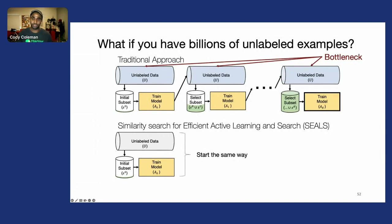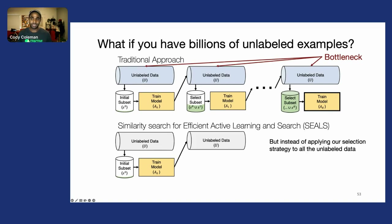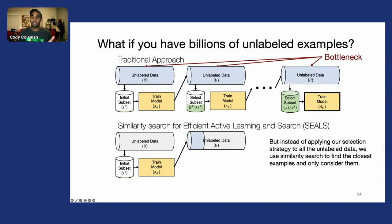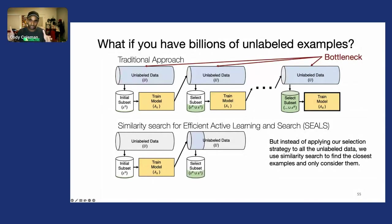But instead of applying our selection strategy to all of the unlabeled data, we use similarity search to find the closest examples and only consider that small candidate pool. From that neighborhood, we select the best examples to label and update our labeled set.